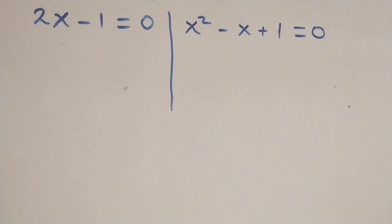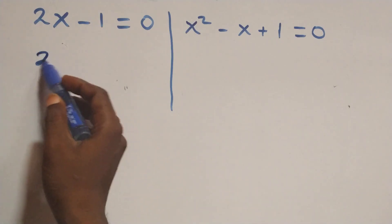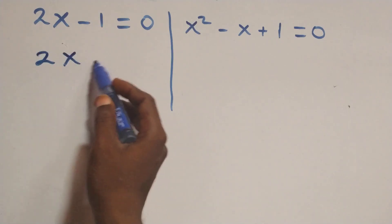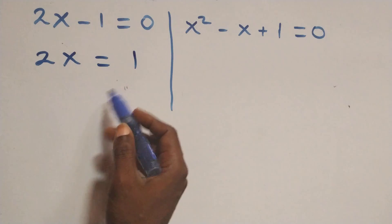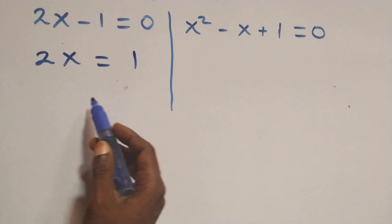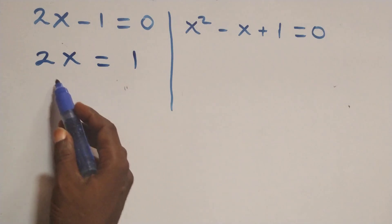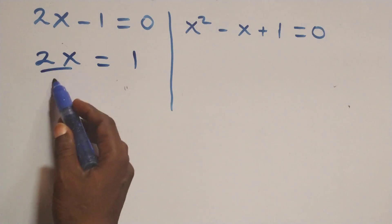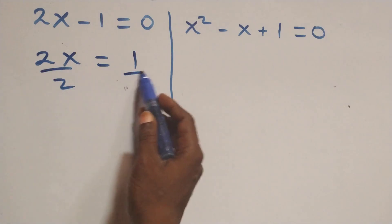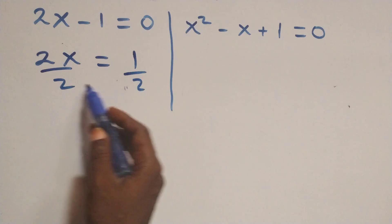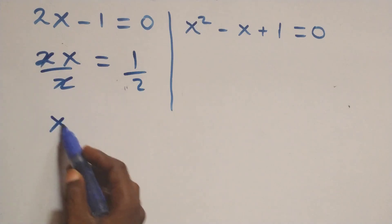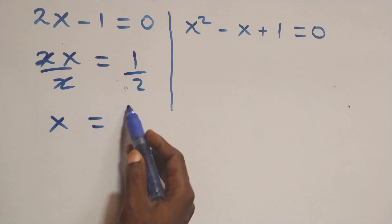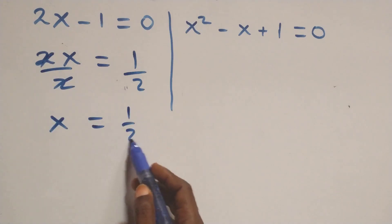Solving 2x − 1 = 0: we get 2x = 1, divide both sides by 2, giving x = 1/2. This is a real solution.